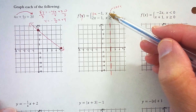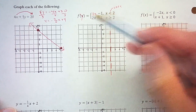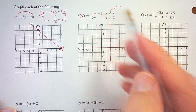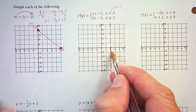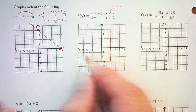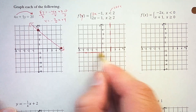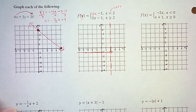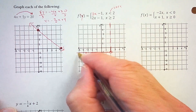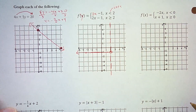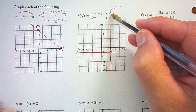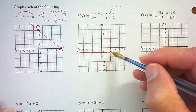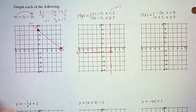Notice that the less-than symbol points left, so we graph to the left side. We have a horizontal line at y equals negative 1, only left of x equals 2. When we reach x equals 2, we put an open circle on the edge of the domain and an arrow pointing left. It's less than 2 but not equal to 2, so we leave that circle open — it gets infinitely close to that point but does not touch it.